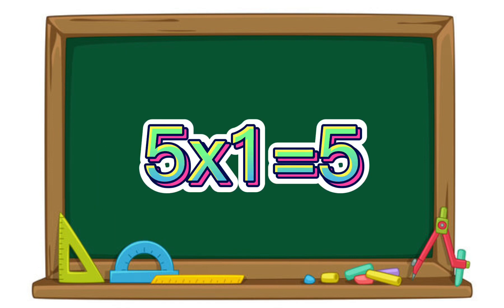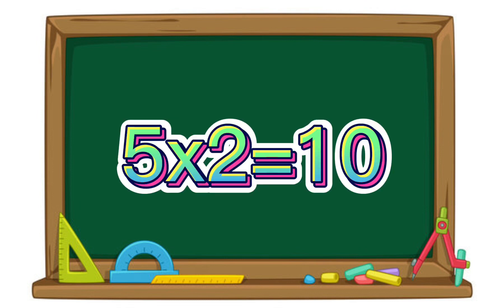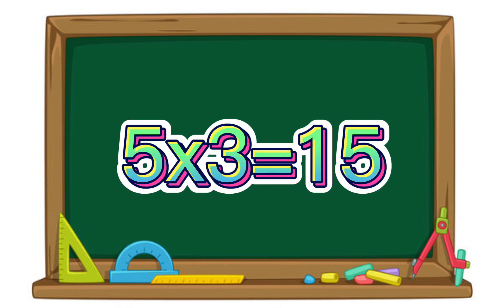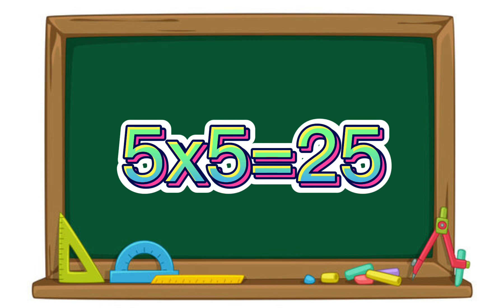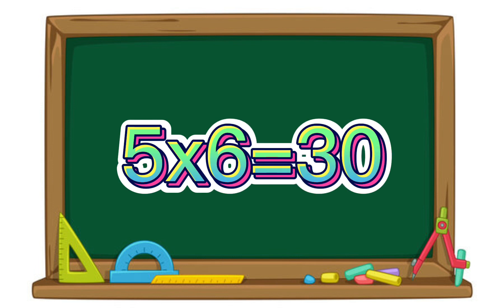5 times 1 equals 5. 5 times 2 equals 10. 5 times 3 equals 15. 5 times 4 equals 20. 5 times 5 equals 25. 5 times 6 equals 30.